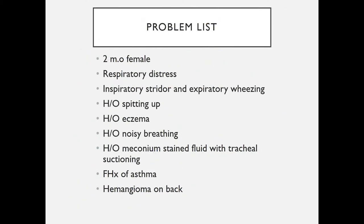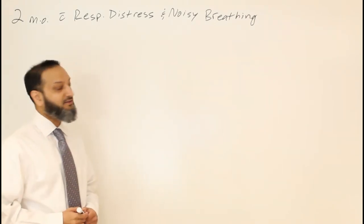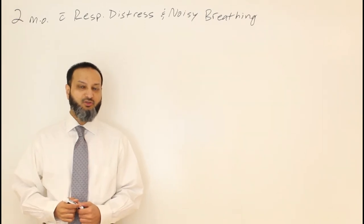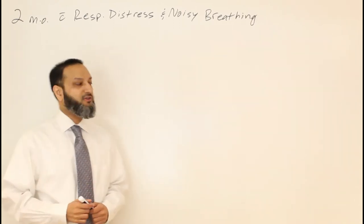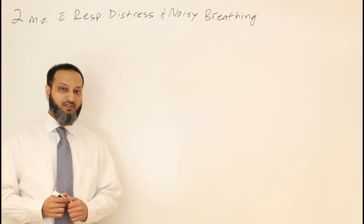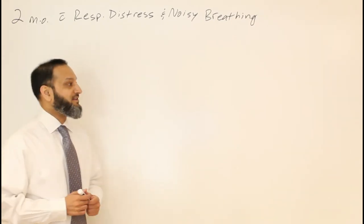To summarize our problem list, we have a two-month-old female presenting with respiratory distress, inspiratory stridor, and expiratory wheezing. She has a history of spitting up, a history of eczema, a history of noisy breathing, and a history of meconium-stained fluid with tracheal suctioning at birth. There is a family history of asthma, and she also has a hemangioma on the back. We need to build a differential diagnosis for this child with respiratory distress and noisy breathing.